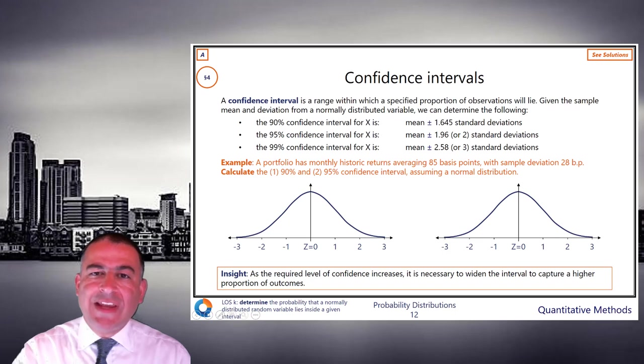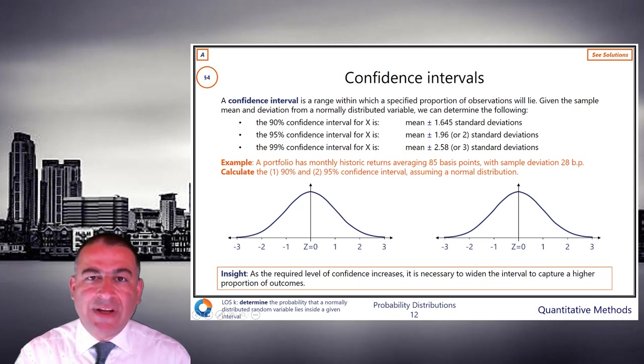So, for example, the point where Z equals 0, it means the historic return equals 85 basis points. Where Z equals 1, your return equals mean plus one standard deviation, which is 85 plus 28.